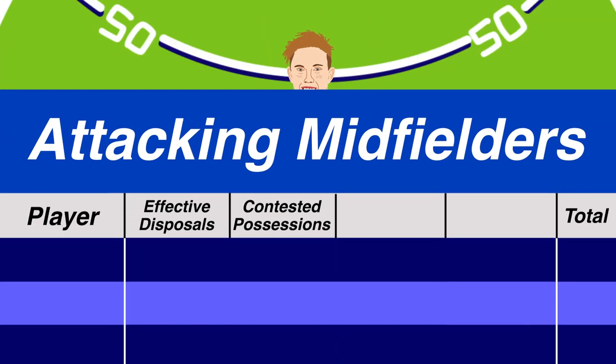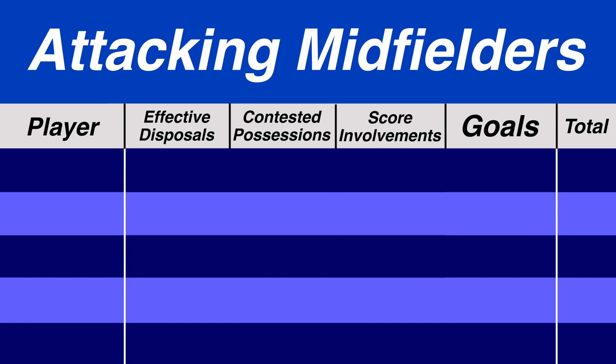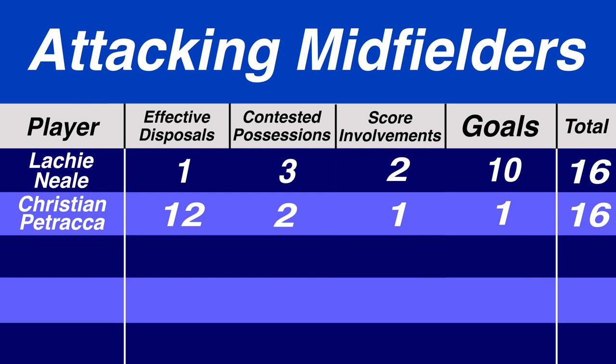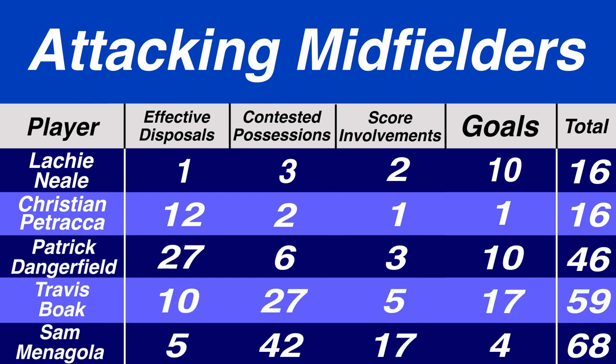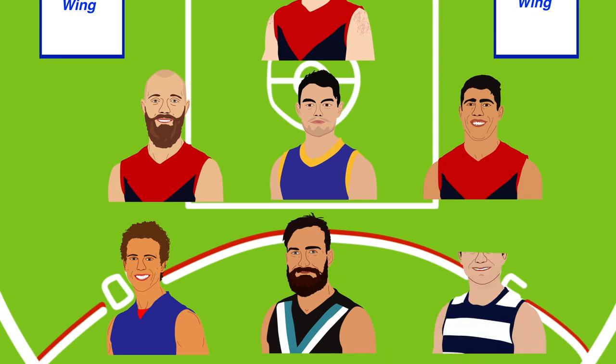To find our other 2 starting mids, we retained effective disposals and contested possessions, but included score involvements and goals to show a more attacking focus. The results justified Brownlow favourite Lachie Neale's selection, who tied with Christian Petracca on 16 points. These two complement each other well — Neale wins plenty of the ball, while Petracca was the league's most damaging midfielder going forward. Third placed was Patrick Dangerfield, whose strong score involvements and goal stats meant he was well suited to fill the final position in the forward line.